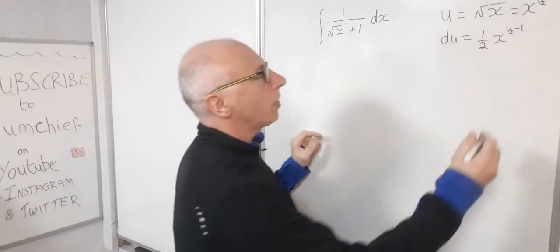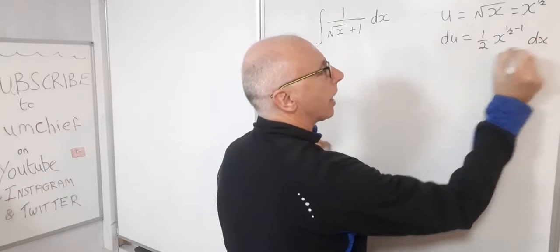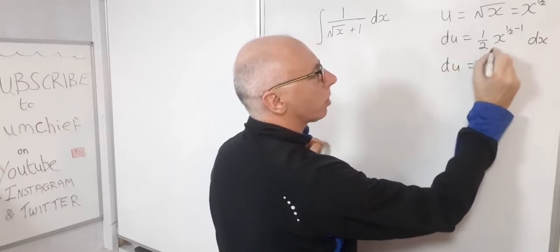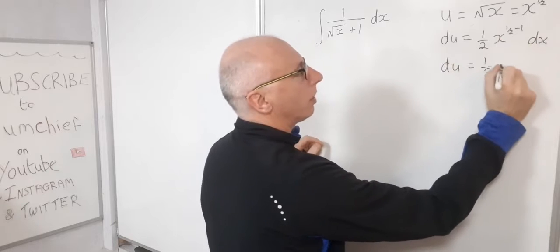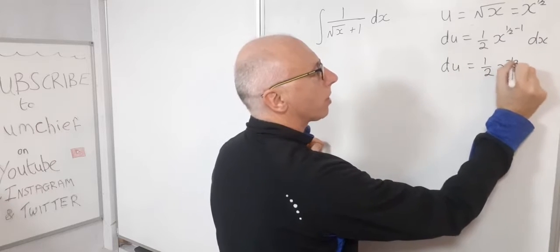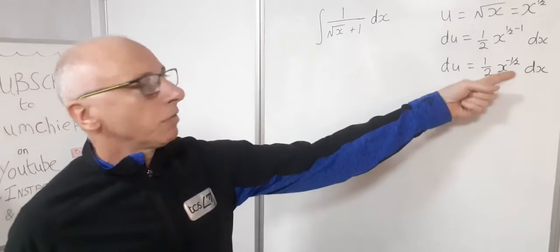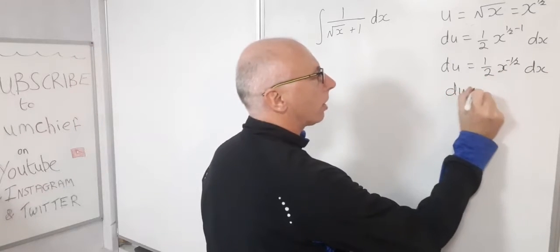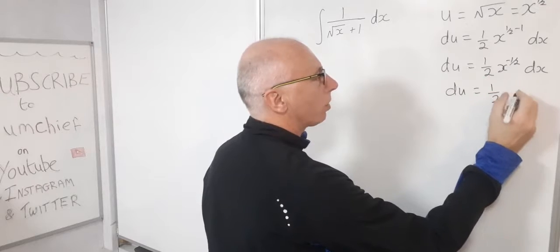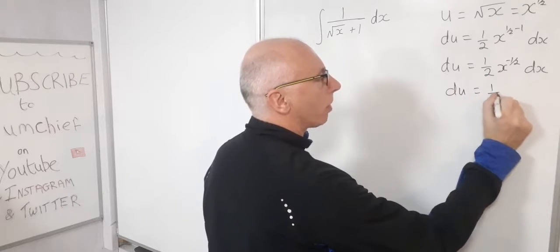So now we can just simplify this. So that's dx. So now we've got du equals one half of x to the minus one half dx. And again we have a negative exponent du equals one over two times square root of x.